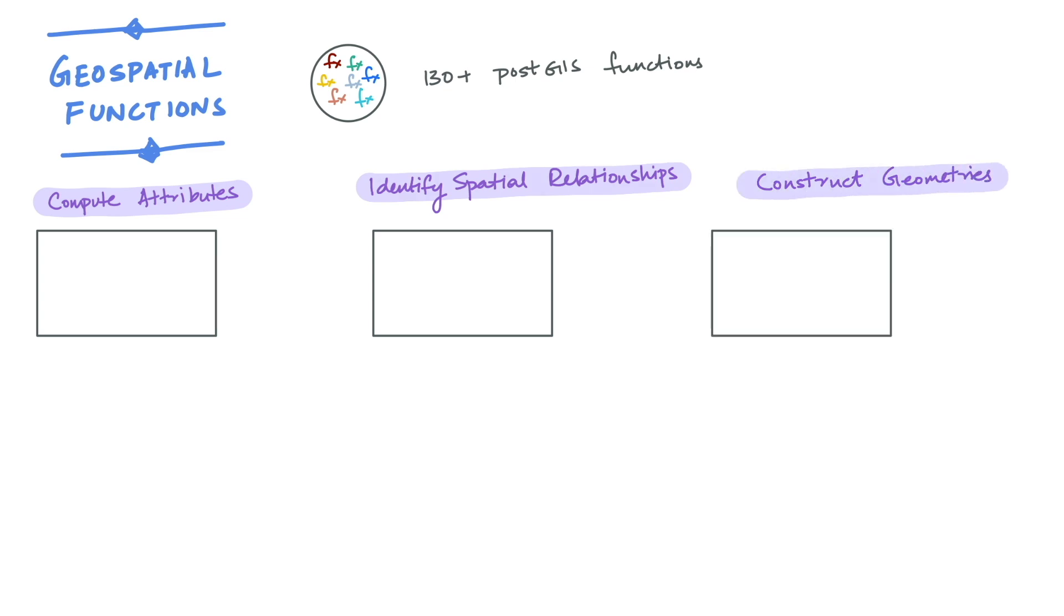Let's look at each of these more closely. Attributes describe particular aspects of a geometry. We can use Kinetica's geospatial functions to compute attributes such as the area and perimeter of a polygon,